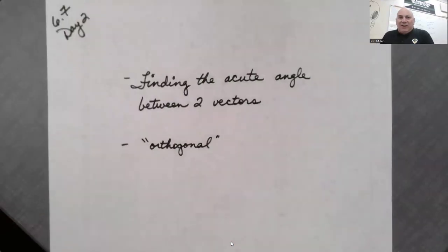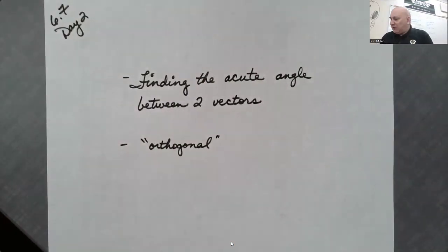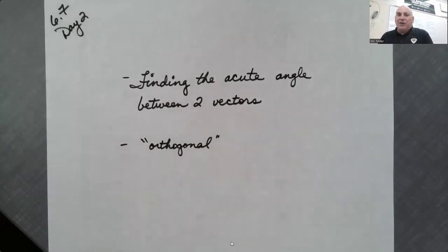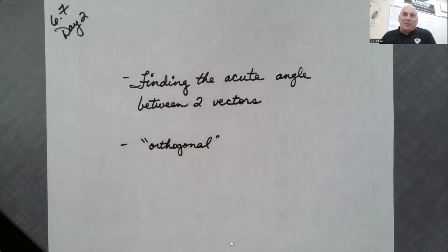That's the first lesson in dot products. Here's the second lesson. Let's find the acute angle between two vectors. We're also going to define the word orthogonal — well, we're going to define it for our purposes, just like we defined a vector as a quantity with magnitude and direction. That works for our purposes even if it's not a complete definition. We're going to define kind of sort of what orthogonal is.